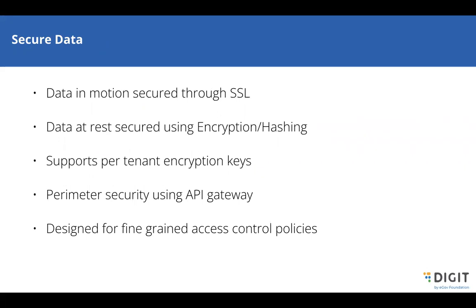For security, data is encrypted using SSL with encryption keys maintained at the tenant level — each tenant has different encryption/decryption keys. Authentication, authorization, and idempotency checks are performed at the API gateway. Role-based access control (RBAC) is implemented via the access control service. Attribute-based access control (ABAC) was considered but not yet implemented as it's not currently required.